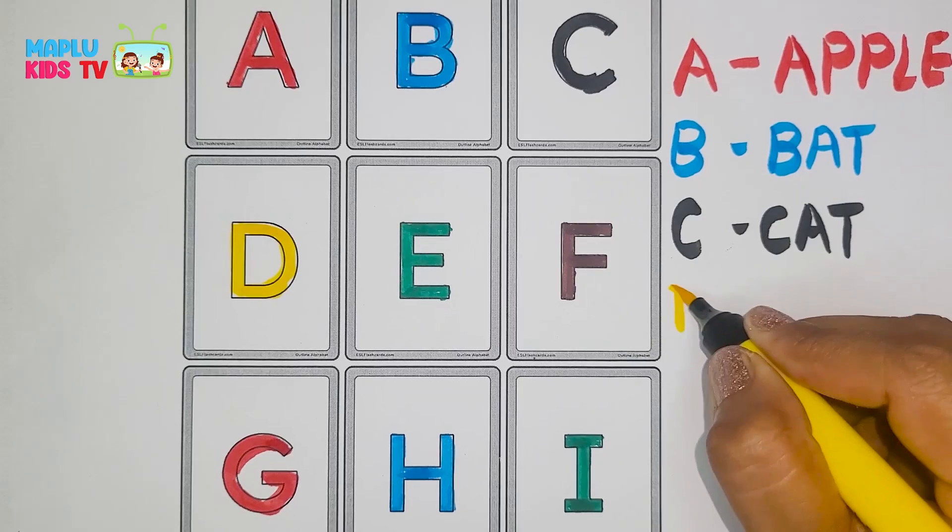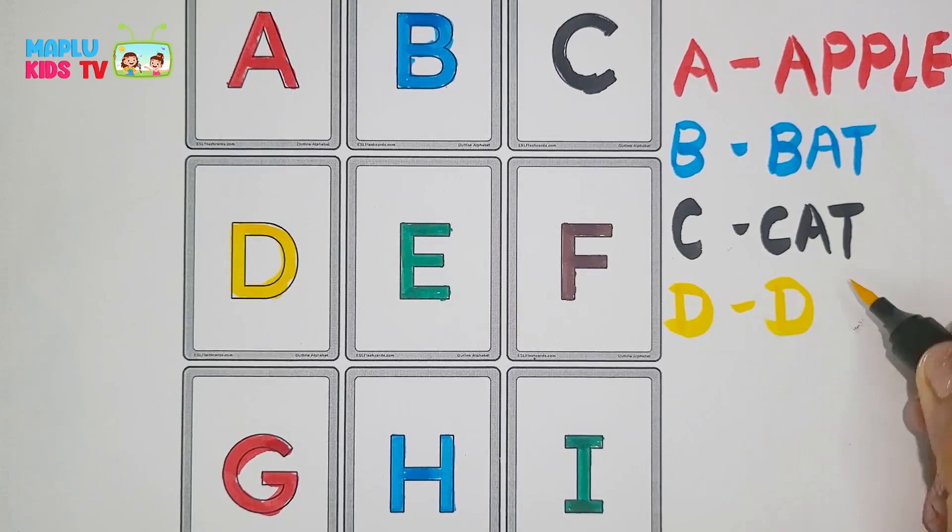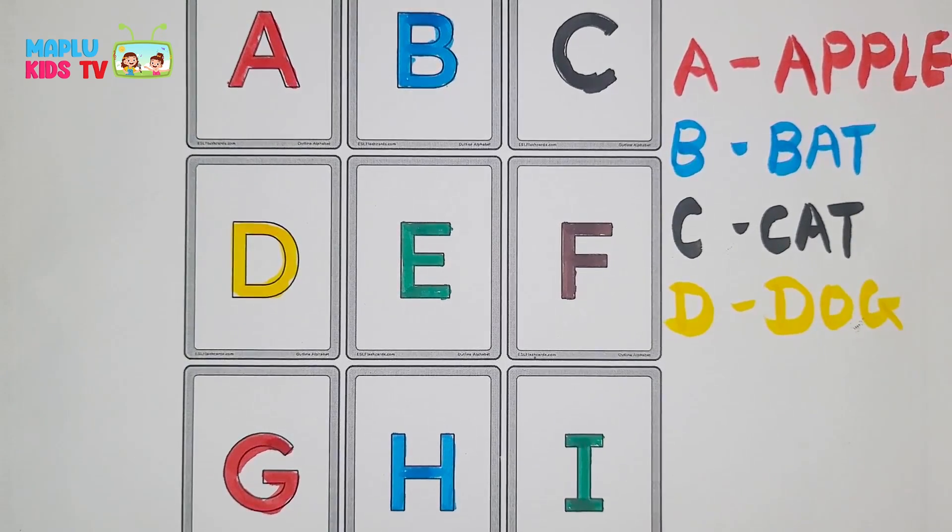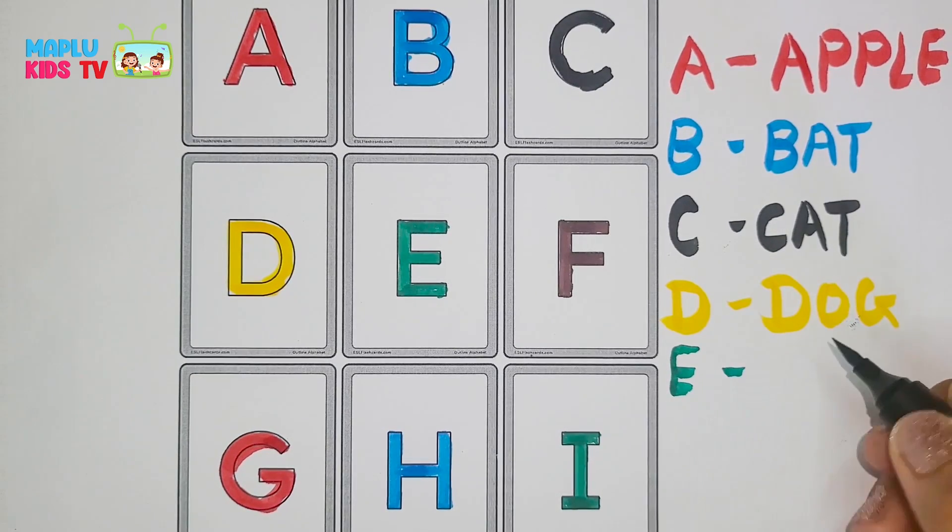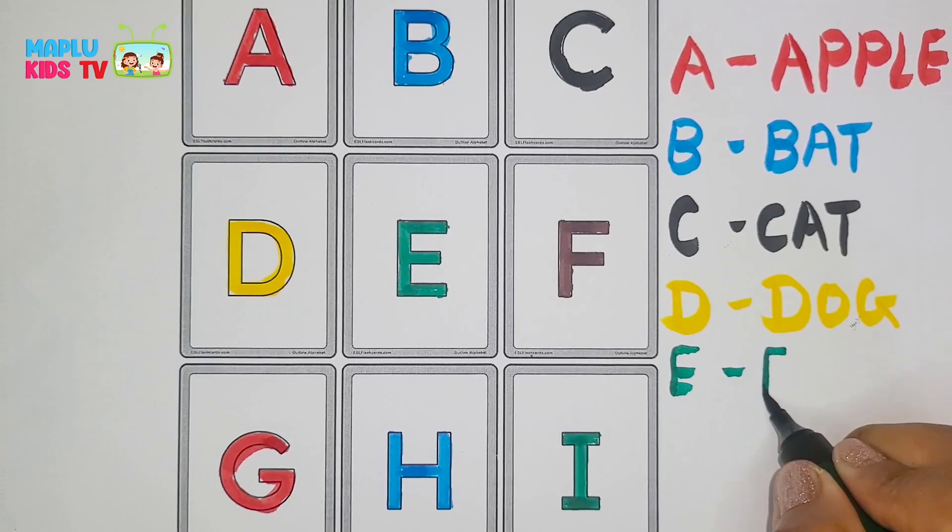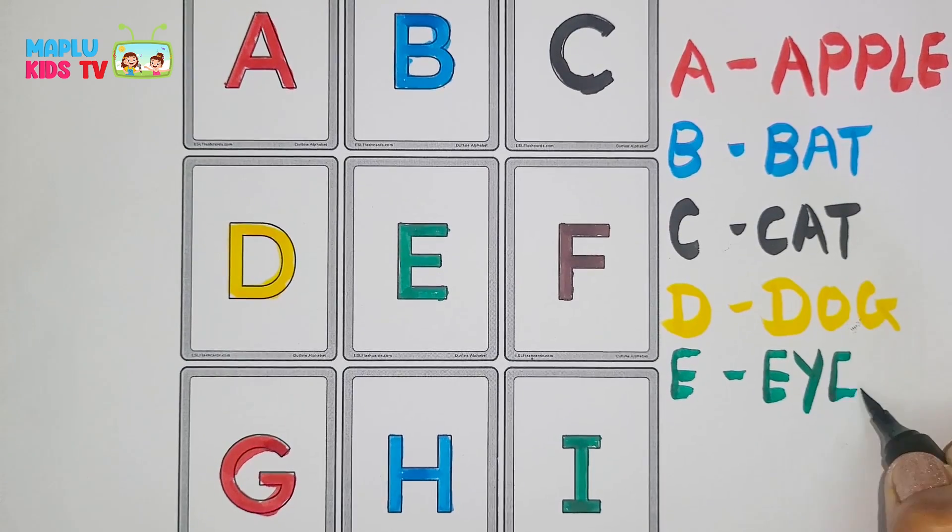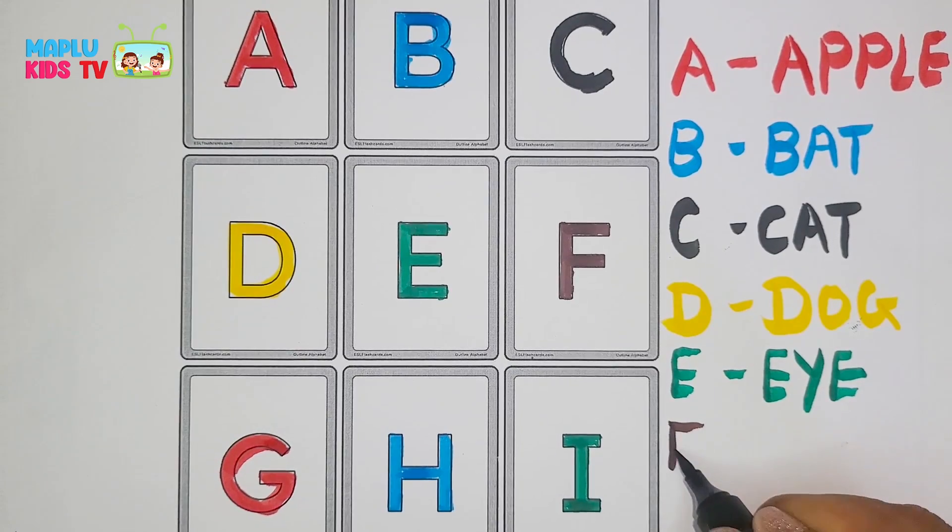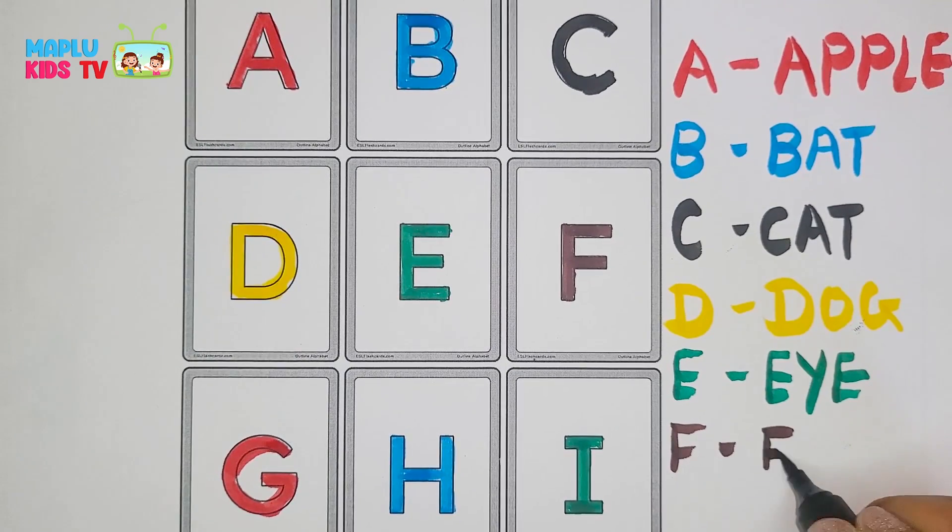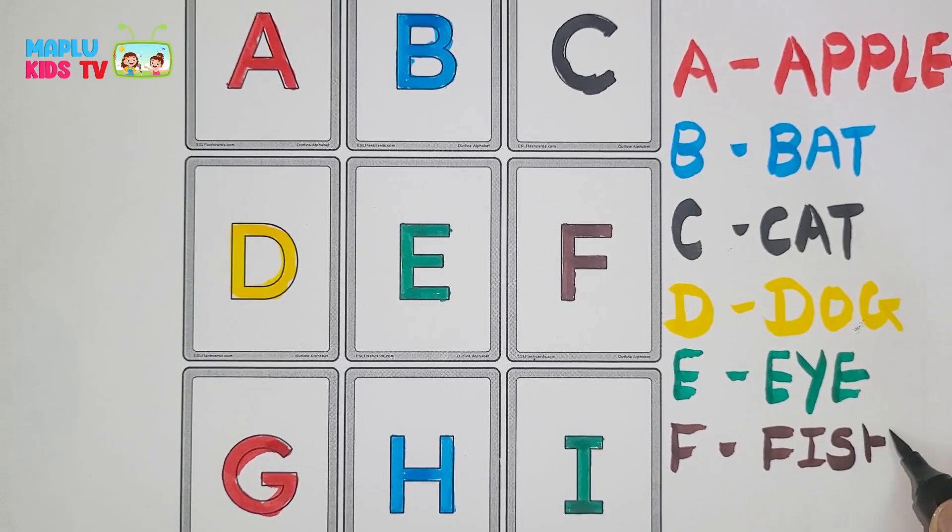D for dog. D O G. E for eye. E Y E. F for fish. F I S H.